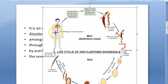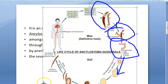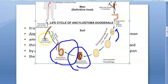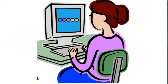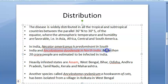The worm enters percutaneously via the skin, travels through the bloodstream, reaches the pharynx where it is swallowed, and then settles in the small intestine. There, adult worms mate and release eggs which pass out in the feces. In the soil, the egg develops — it contains a rhabditiform larva, which hatches and becomes the filariform larva that is infective.